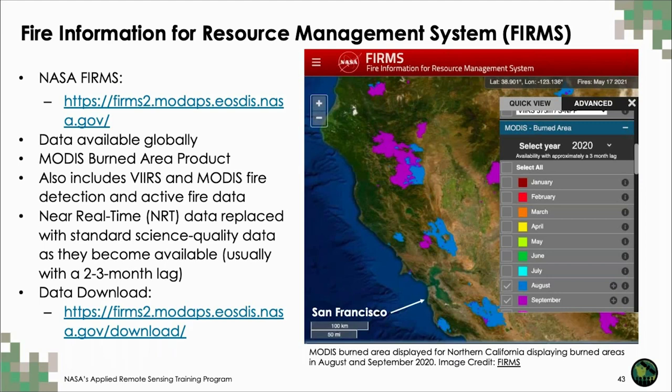I want to briefly touch on NASA's Fire Information for Resource Management System, or FIRMS. Sessions three and four covered FIRMS in depth, so refer back to those for demonstrations. For the purposes of this session, FIRMS is a great place to view global MODIS burned area estimates, and the near-real-time data capabilities are also useful for rapid response to fires.